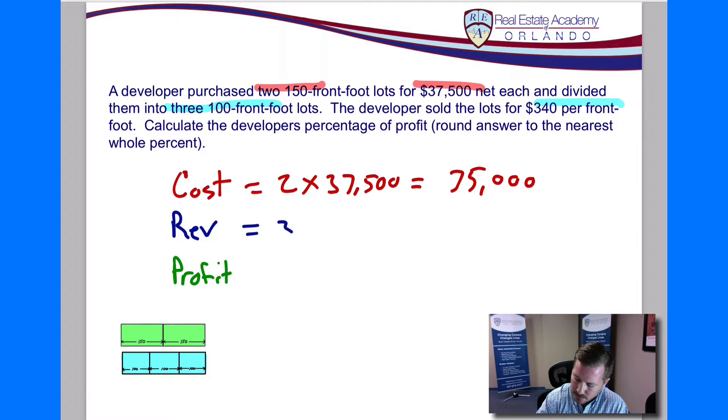So we've got $340, that's how much we're charging per foot, and we have 100 of those per lot. And then we're going to take that whole number and multiply that by three because we have three lots. So 340 times 100, then multiply the final answer by three, and we have $102,000.